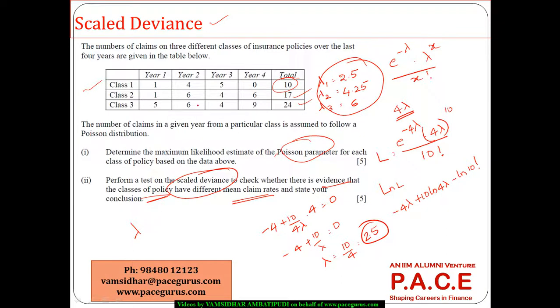So for that one I'll take it as uniform assuming all classes are the same. What is my likelihood here or what is my lambda here? My lambda is going to be, if I'm taking all of them to be the same, my lambda is nothing but 51 by 12.